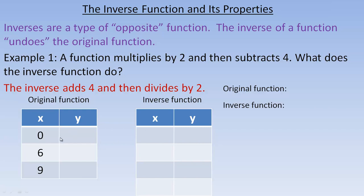I have a table of values, and there's no particular reason I chose 0, 6, and 9 — I could have chosen other numbers, negatives, or fractions. I chose whole numbers to make that part simpler, because this lesson isn't about multiplying with fractions; it's about what inverses are.